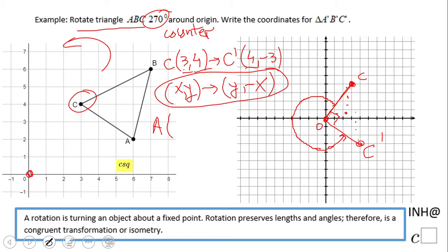going to keep it, don't change it, and we're going to take the x second and switch its sign. That's what the rule says: A' is (2, -6). What about point B? Point B, which is (7, 6),